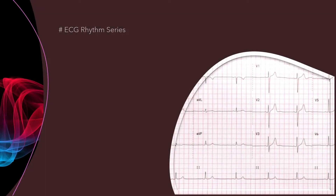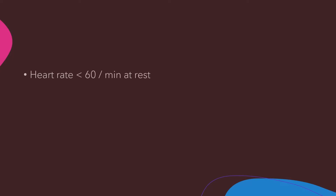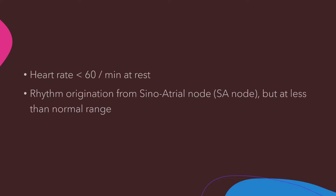Hi, welcome to Last Second Medicine channel. Today you will learn about sinus bradycardia. We call a rhythm sinus bradycardia when the heart rate is less than 60 beats per minute at rest, and rhythm origination is from the SA node.